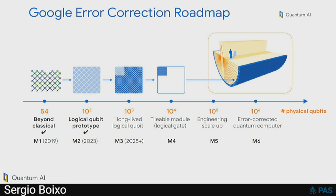It's going to take a while and a lot of people. You get an idea of how complicated we think this machine is going to be — we're not going to get there in just one go. We have several milestones. We already achieved what we announced were our first two milestones. I'm going to be talking mostly about the first milestone and a little bit about the second milestone, a logical qubit prototype. Our next milestone, which we hope to achieve around 2025, is a long-lived logical qubit.